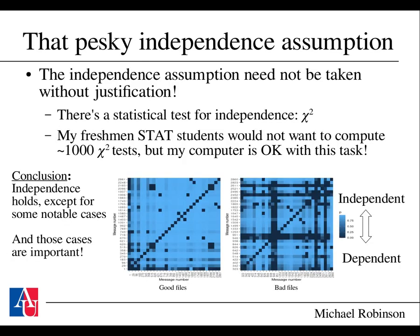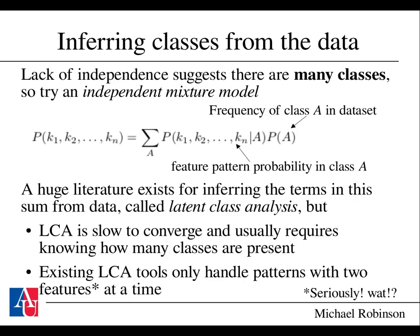That pesky independence assumption — is it really true? There's a statistical test: the classic chi-squared test seems to apply here, though you need to run many chi-squared tests for all the different messages. In this particular data set, the good files show basically independent messages, whereas the bad files are not entirely independent. Independence seems to hold in most cases, but there are notable violations, and those cases are actually important. The failure of independence suggests there are actually multiple classes, not just good and bad files.